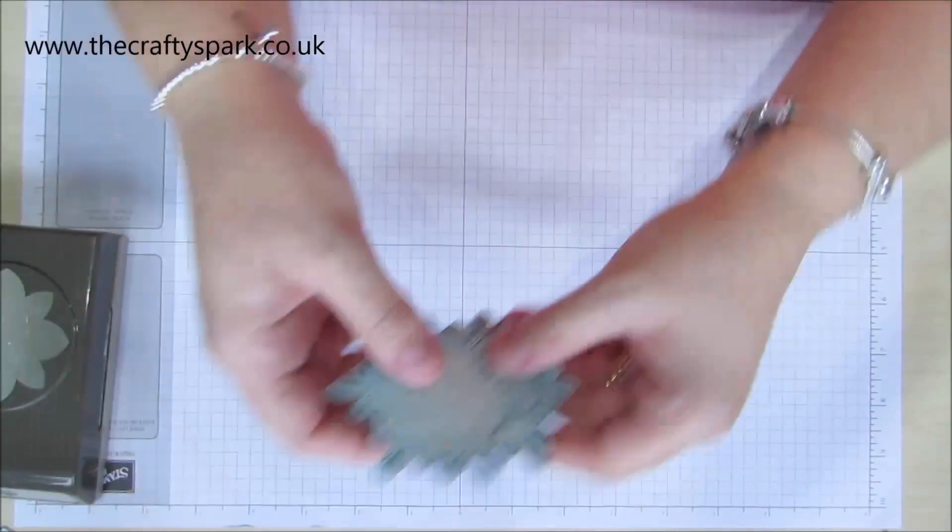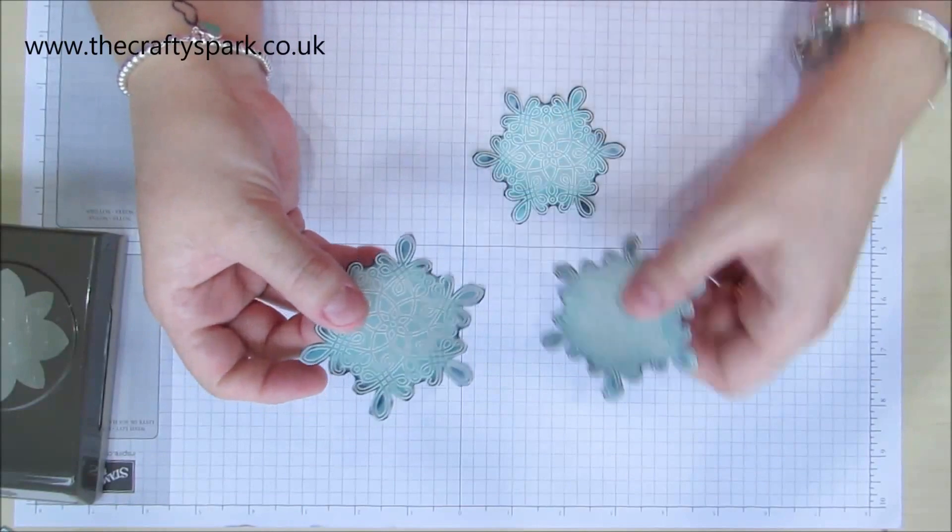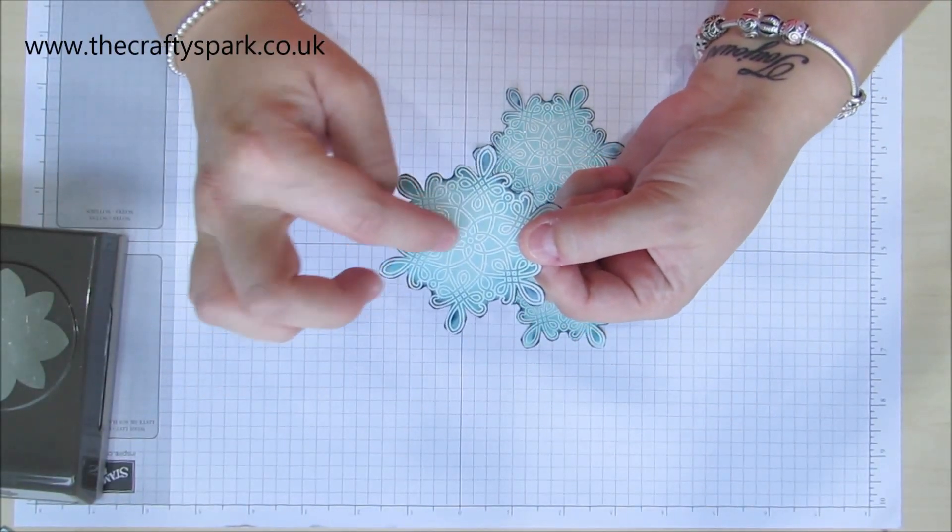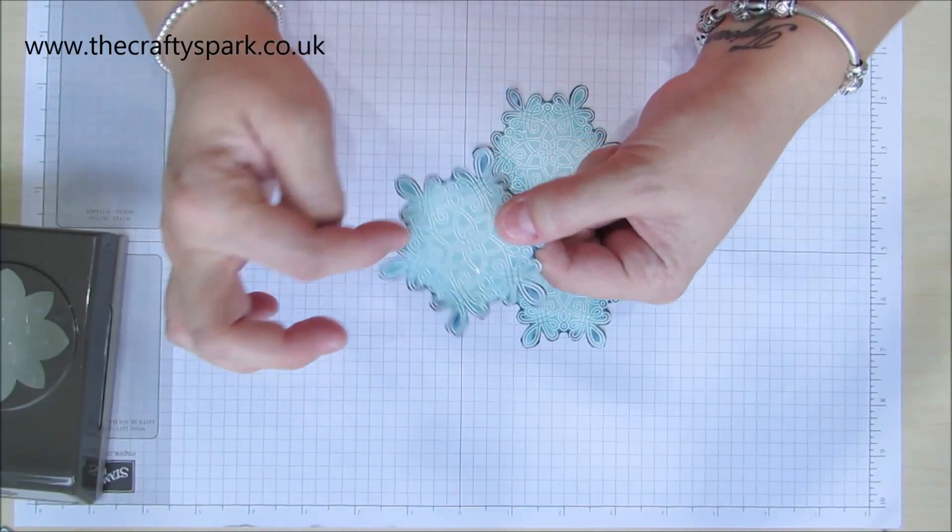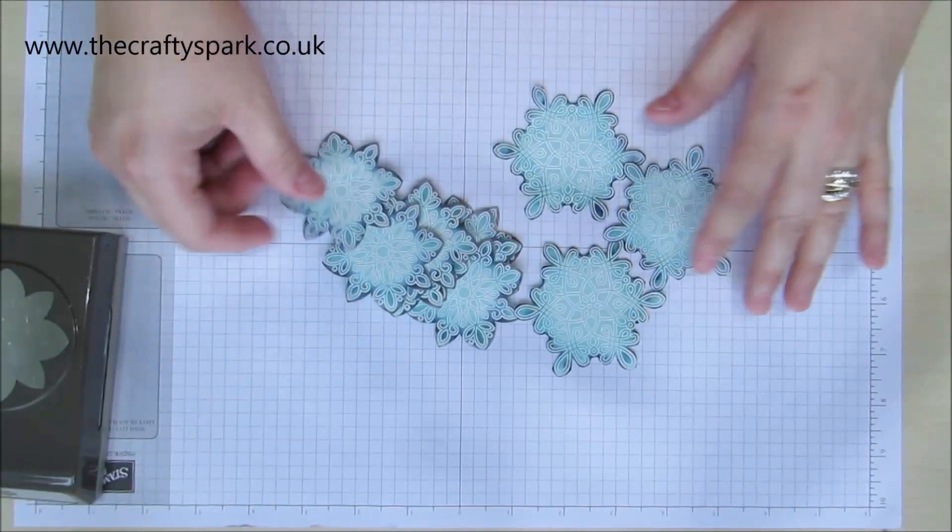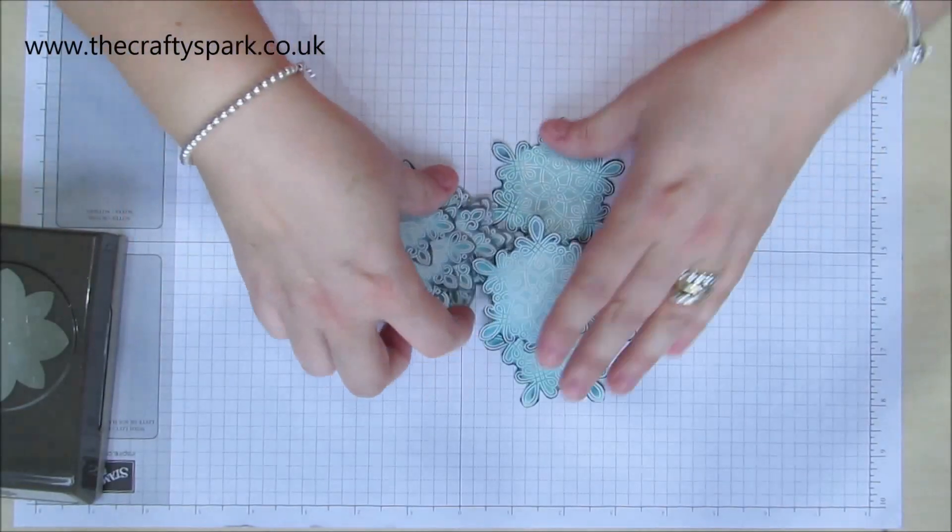So what I've done is I've done my big ones already. Now I've embossed it with some white embossing powder and then I've sponged the edges. I've done the same on some smaller ones as well.